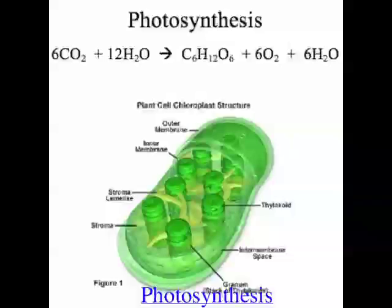Photosynthesis is actually a two-stage process — there's a light-dependent stage and a light-independent stage. The light-dependent stage involves the trapping of light energy on the grana membranes inside chloroplasts. This light energy is used to produce ATP and also to split water (H₂O) into oxygen and hydrogen ions, which are then gathered up by a carrier molecule called NADP.